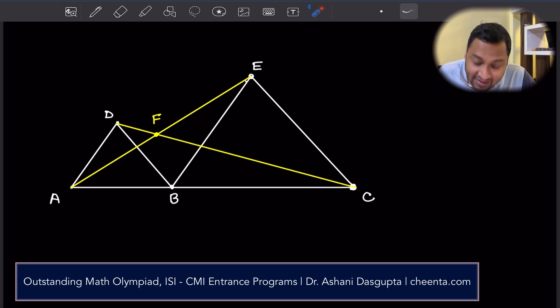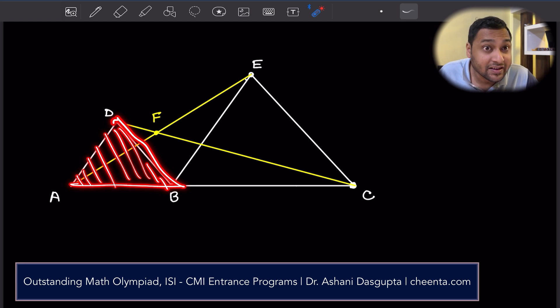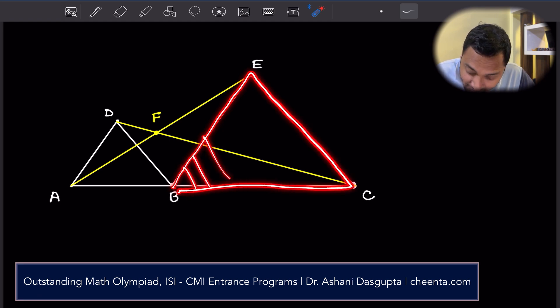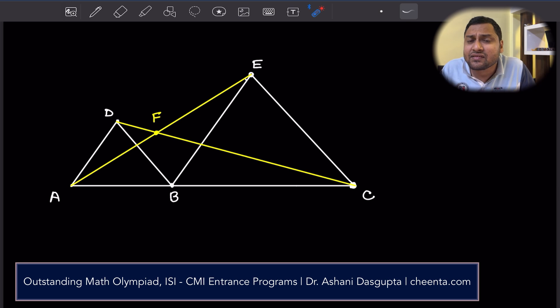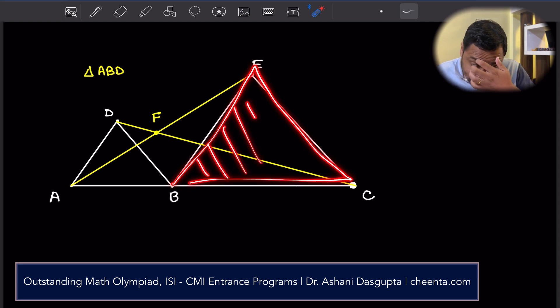The problem says that there are two equilateral triangles. One of them is ABD, this one. And you should draw a picture of this, pausing the video here. So ABD is an equilateral triangle and there is another equilateral triangle BEC, this one. So there are two equilateral triangles and there is nothing given related to the length of the sides of the equilateral triangles. It's just ABD that's equilateral, and BEC, this one, is equilateral.